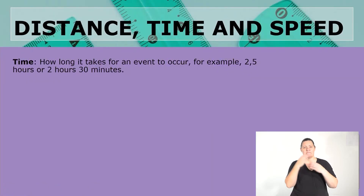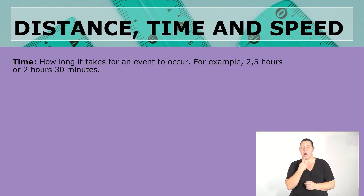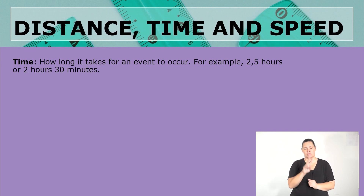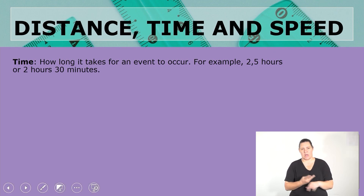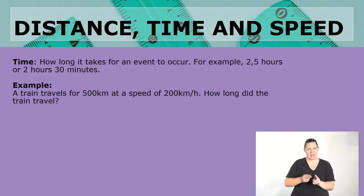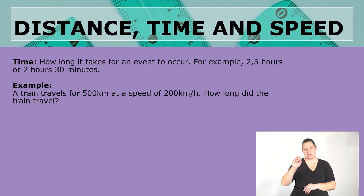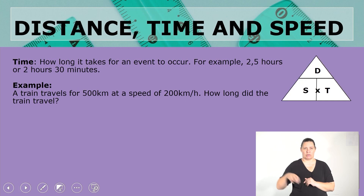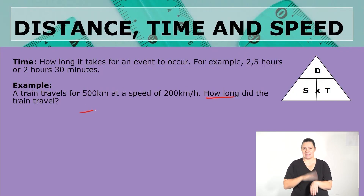Time. Let's look at an example focusing on time. Time is how long it takes for an event to occur — for example, two and a half hours or two hours 30 minutes. A train travels for 500 kilometers at a speed of 200 kilometers per hour. How long did the train travel? Remember, this triangle is going to help us with our formulas. When the question says 'how long,' we are looking for time.